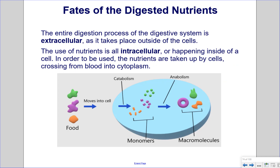Fates of the digested nutrients. The entire digestion process of the digestive system is extracellular, as it takes place outside of the cells. The use of nutrients is all intracellular, or happening inside of a cell. In order to be used, the nutrients are taken up by the cells, crossing from blood into the cytoplasm.